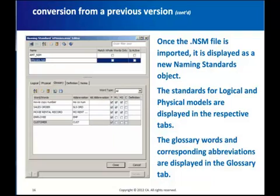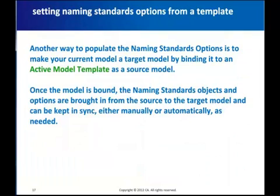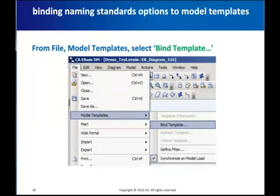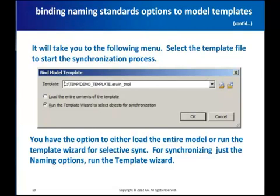You can also enforce naming standards by binding the current model as a target to an active model template, which will be the source model. You can do this by creating an active model template with one or multiple naming objects as desired, and then linking them to as many models as you like. Using an active model template allows you to maintain your naming standards and glossary in just one place, which you can then synchronize with the associated models either manually or automatically during loading of the target model. Once you have an active model template, you can bind it to the current model by selecting Bind Template from the File > Model Templates menu.